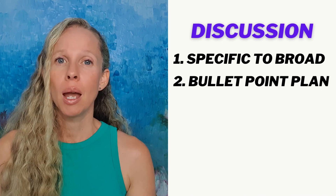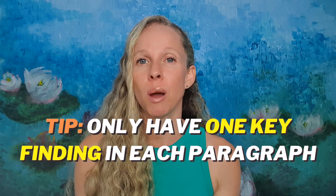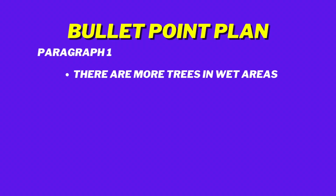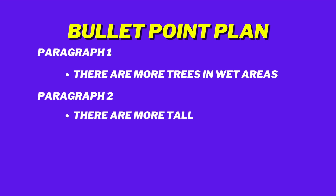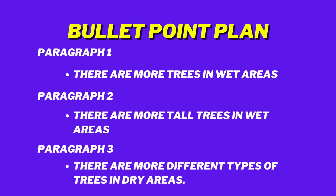Also include any work that might need to be done in the future. What I find most helpful with the discussion is before I start writing, I write a bullet point plan, because each paragraph should only have one point. Using our example of trees in central Australia, my first bullet point might be 'there are more trees in wet areas', my second could be 'there are more tall trees in wet areas', my third could be 'there are more different types of trees in dry areas'. I continue that bullet point plan until I have my entire discussion laid out.